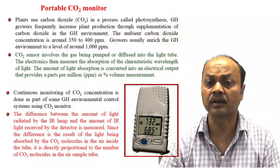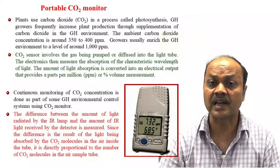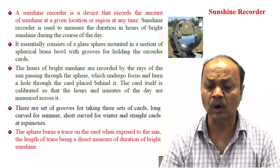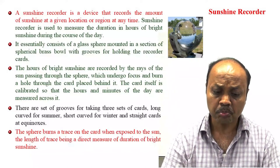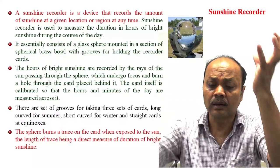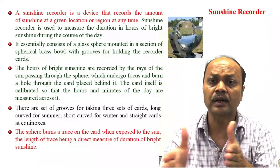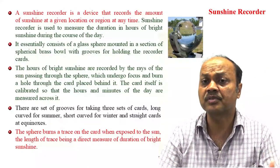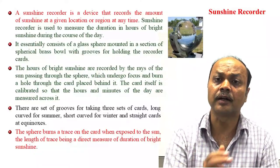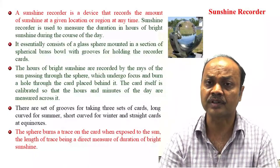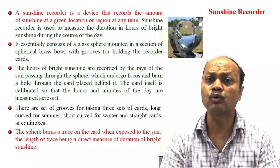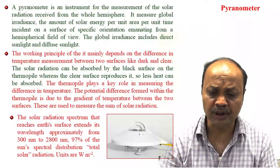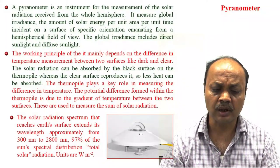A sunshine recorder is also used. Here, a trace card inside burns due to concentrated sunlight, and based on that you can know the total duration of sunshine you are getting. This is important because sunshine duration is related to photosynthesis. You can know how the sunshine hours are changing throughout the year at a particular location.